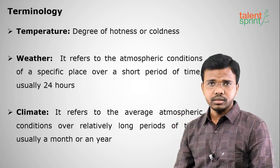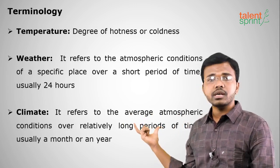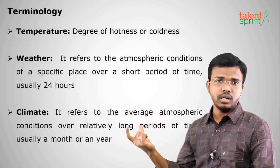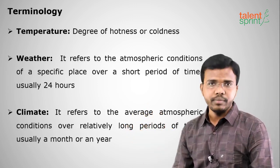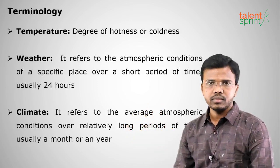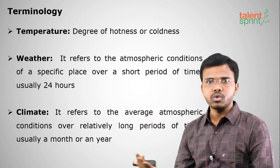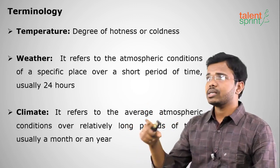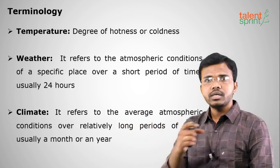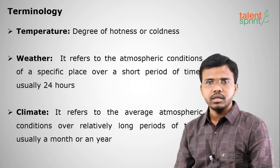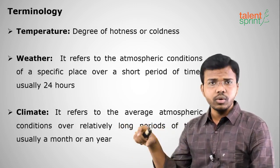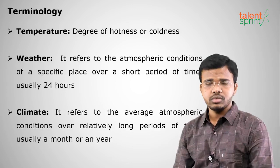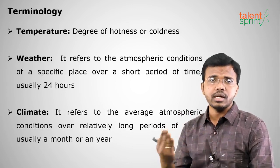If we take the average weather phenomenon either for a month or for a year, it is called climate. Today it is hot, today it is cold — that is called weather. If it is daily hot, we say it is tropical climate; if it is daily cold, it is temperate climate; if it is daily snowy, we say it is a polar climate. This is the major difference between weather and climate.